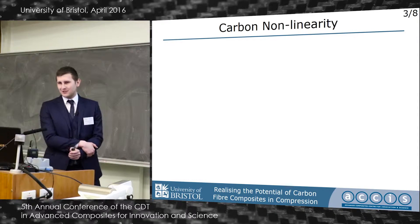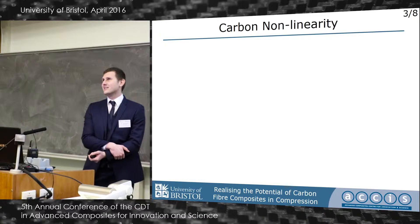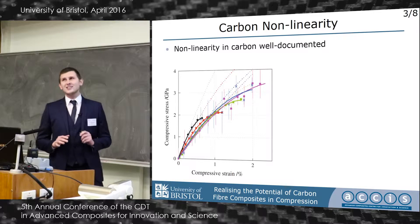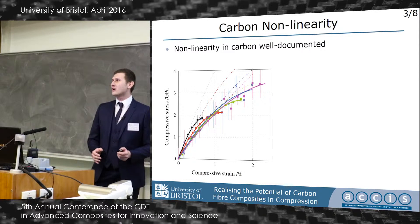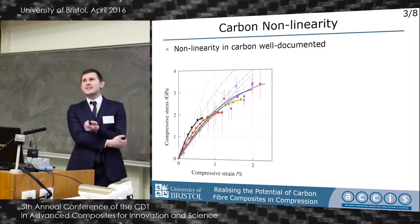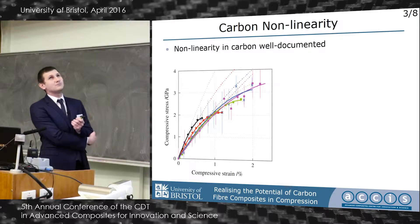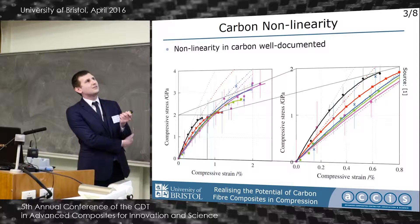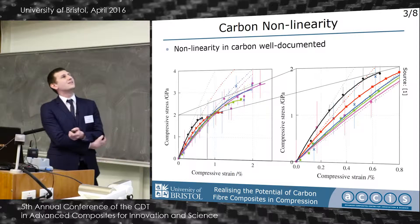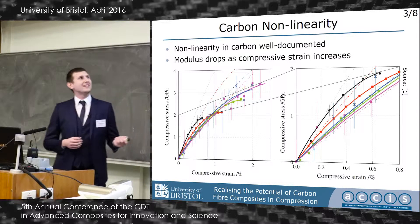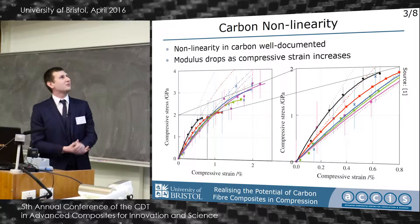When we think about high performance materials, we have this idea that they're linear up until failure. Now this is not the case — the nonlinearity in carbon is quite well documented. You can see here, this is real test data from several different tests, showing a strong indication of nonlinearity. If I blow this up, it follows similar curves. The modulus will drop as the compressive strain increases.